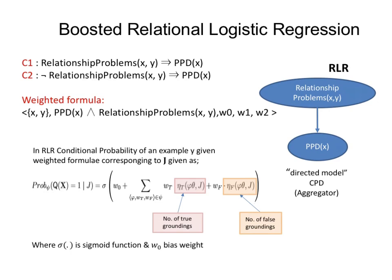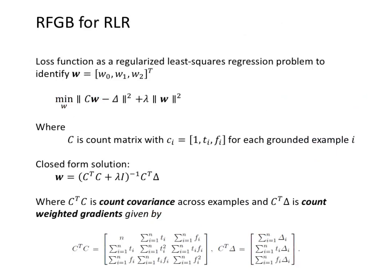Rather than introducing different models, I want to explain how we achieve this: by explicitly computing the number of true and false groundings. It turns out you can boost this as well using a regularized regression and computing the gradient with respect to the functions, giving nice gradients. The key advantage of relational logistic regression is that it transitions much more smoothly with population size.